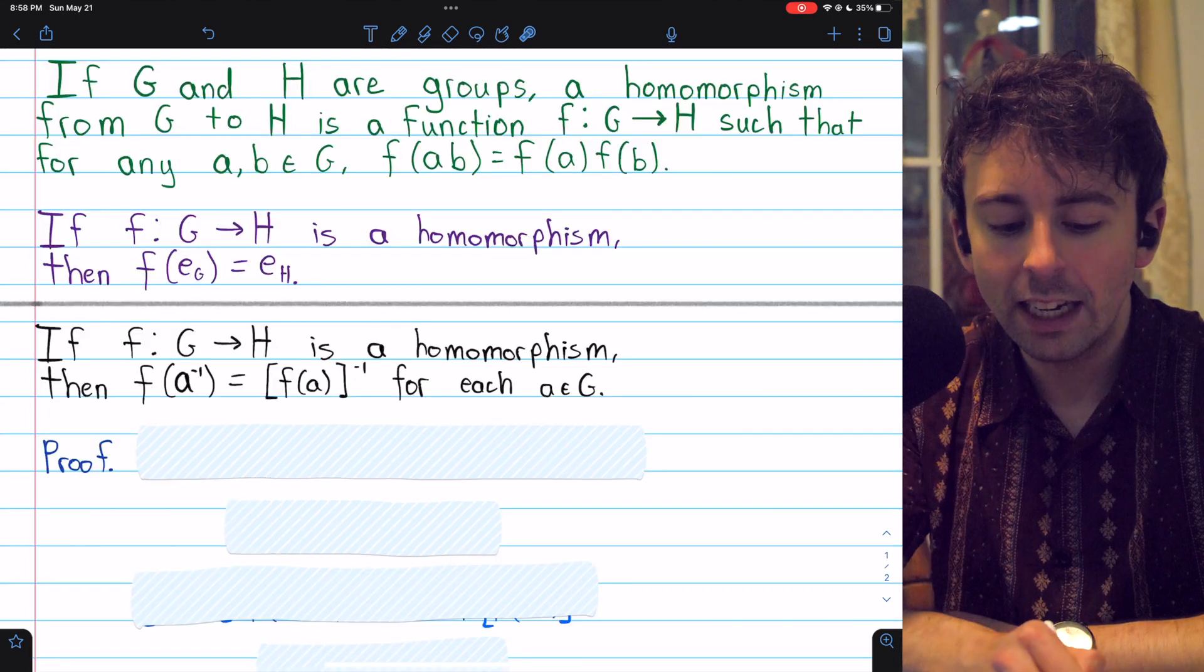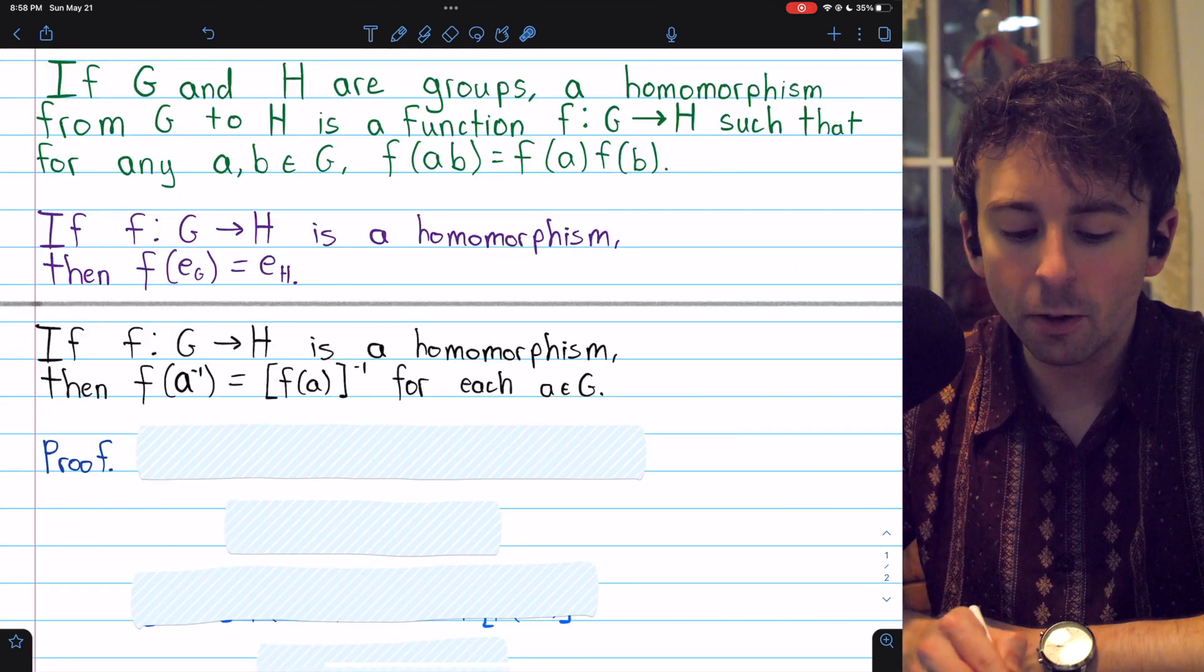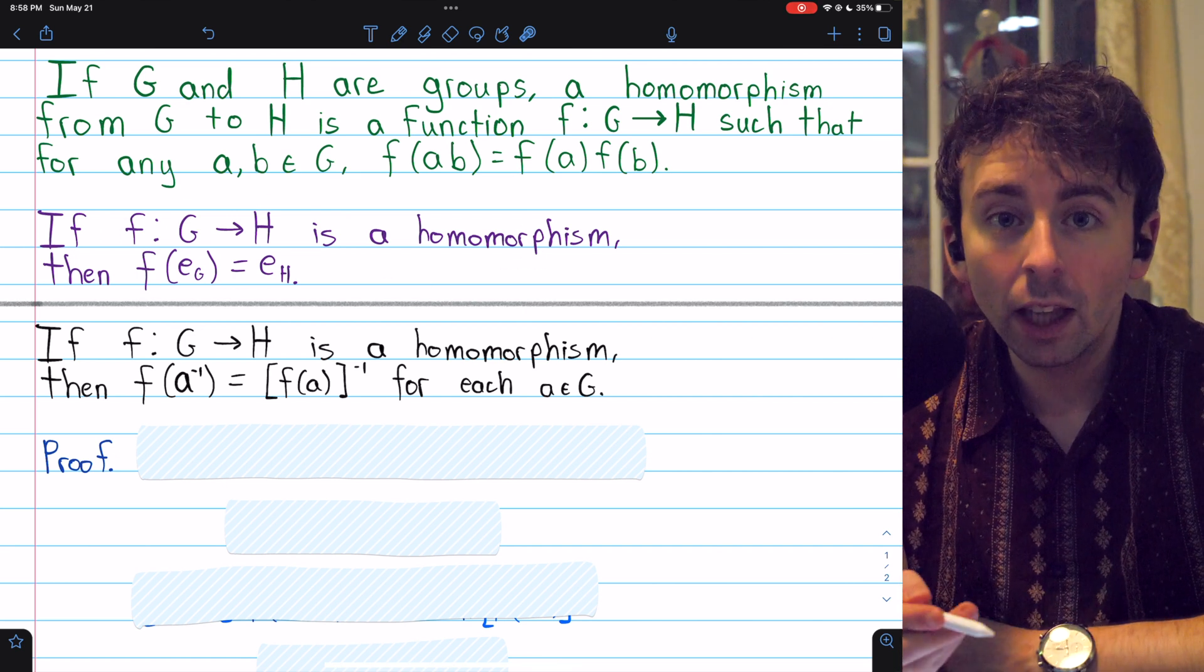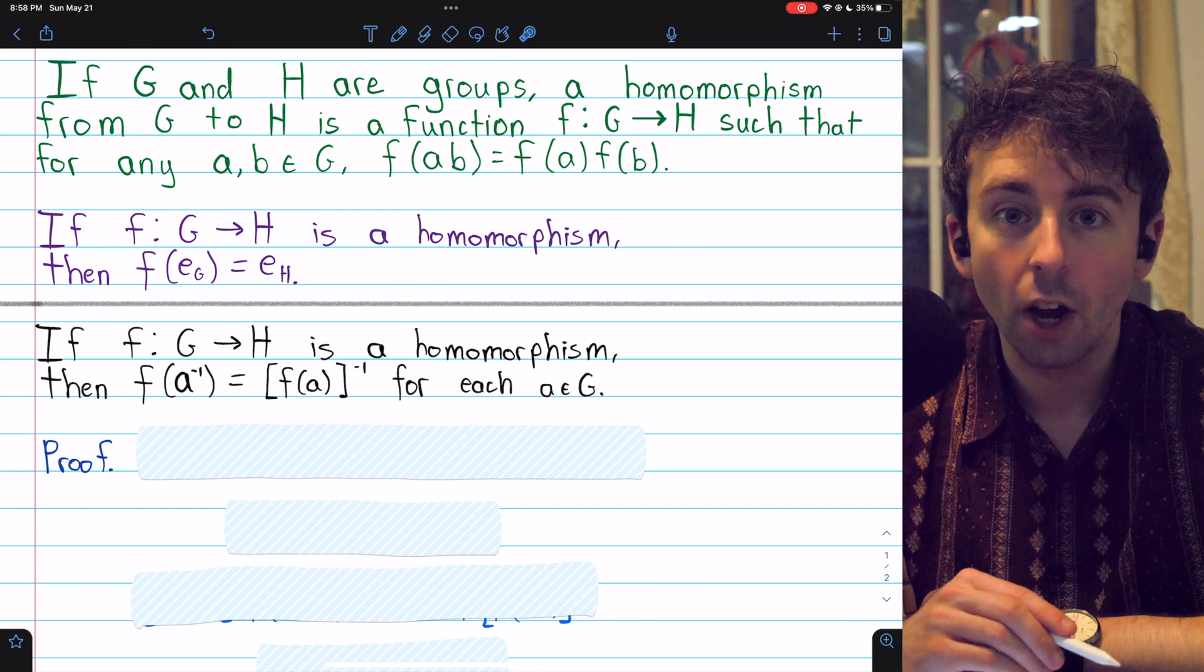In case you need it for reference, here is the definition of a homomorphism, and here is that result that homomorphisms map identities to identities. Relevant links in the description if you need to review either of those topics.